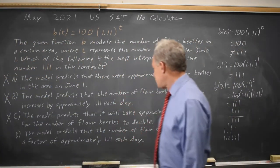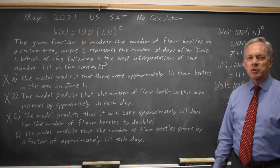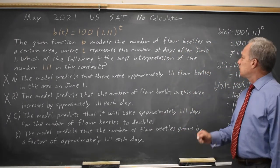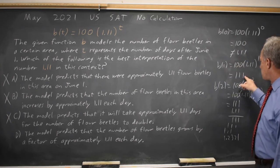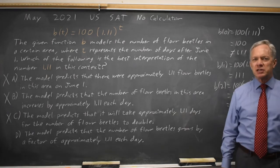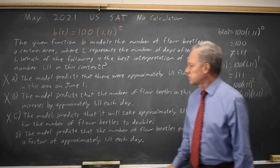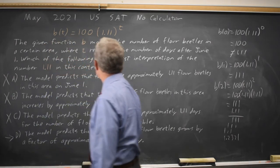Choice D: the model predicts the number of flower beetles grows by a factor of approximately 1.11 each day. From day 0 to day 1, we multiply by 1.11. From day 1 to day 2, we also multiply by 1.11, so choice D is the correct interpretation of the base for this exponential function.